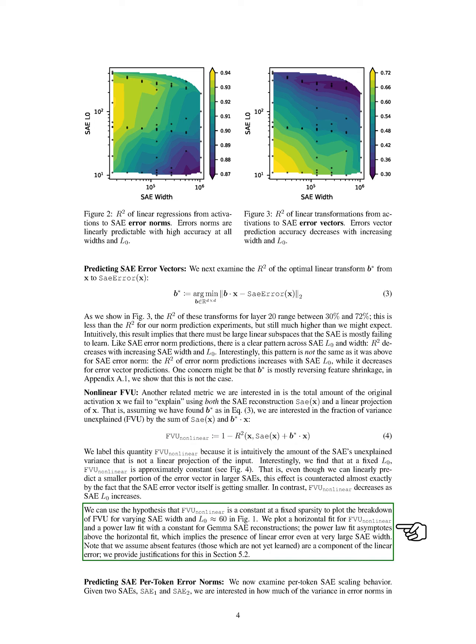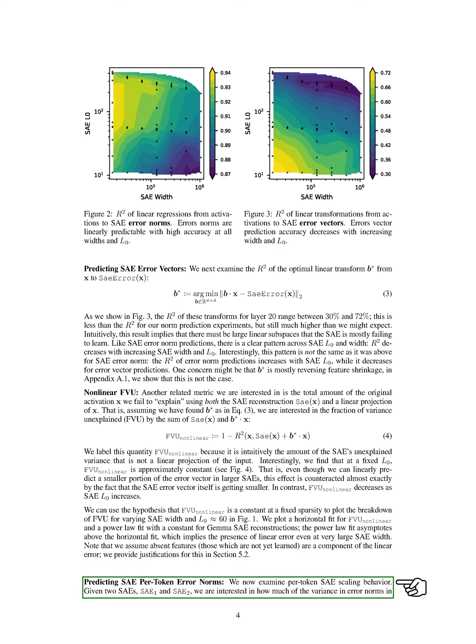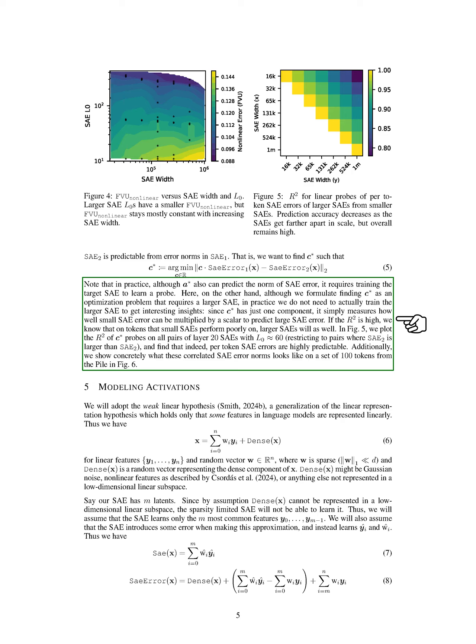We assume that features not yet learned contribute to this linear error. Finally, we investigate the scaling behavior of per-token error norms between two sparse autoencoders, aiming to find a scalar that relates the error norms of one SAE to another. Although the optimal probe for predicting the norm of SAE error requires training, we can gain insights without training the larger model. We find that if the R-squared value is high, it indicates that errors in smaller SAEs can predict errors in larger ones, and our results show that per-token SAE errors are indeed highly predictable.